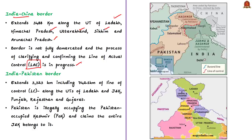The India-Pakistan border extends 3,323 kilometers, which also includes 742 kilometers of the Line of Control. This border runs along the union territories of Ladakh and Jammu and Kashmir, and across the states of Punjab, Rajasthan, and Gujarat. Pakistan has been illegally occupying the Kashmir region since India's independence and is claiming that the entire Jammu and Kashmir belongs to Pakistan.